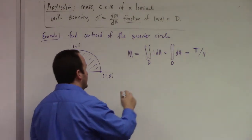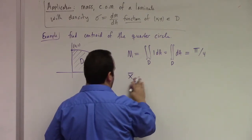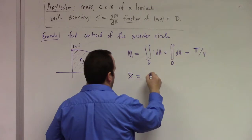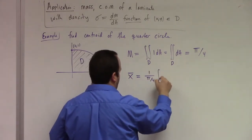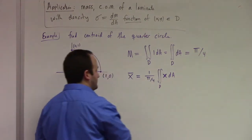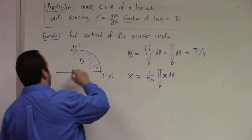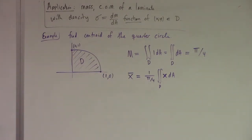Now x-bar, the centroid, equals (1/M) = (4/π) times the integral over d of x dA. Thankfully there is a symmetry here — once I figure out x-bar, I don't need to work out the y one, because by symmetry the centroid has to lie along the line y = x. So x-bar equals y-bar. The type 1 description: y goes from 0 to √(1 − x²), and x goes from 0 to 1.